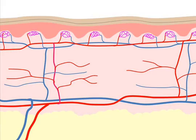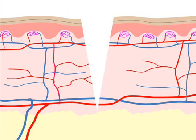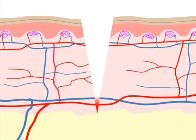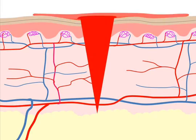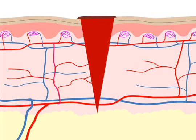Generally speaking, when the skin is injured — for example by a cut or a puncture wound — after the bleeding is stopped, a blood clot is left within the tissue, and a scab will usually form over the wound in the first few days.